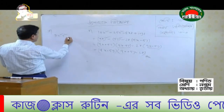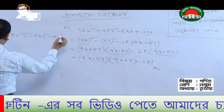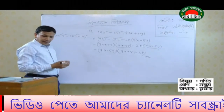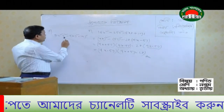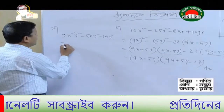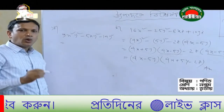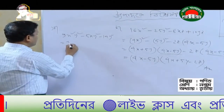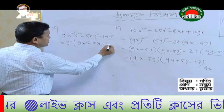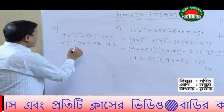9x squared minus y squared, 5xy squared minus 72y squared minus 14y squared. Now there are three terms. What is common? Each term has y squared. So y squared is the common factor. Taking y squared common, we get: y squared into 9x squared minus 5x minus 14.